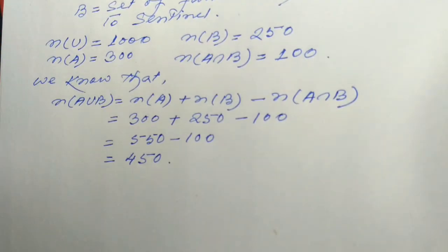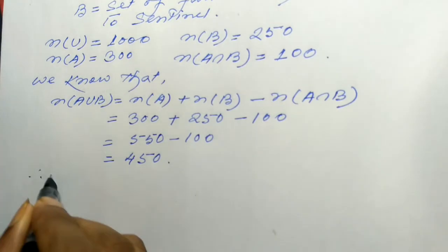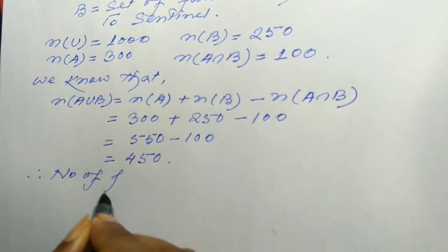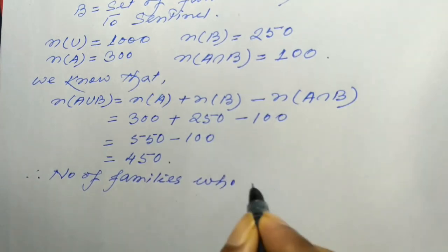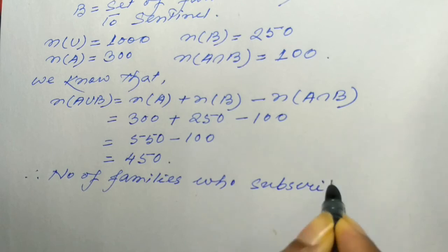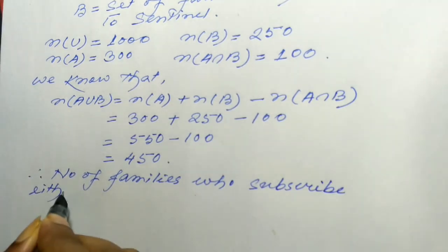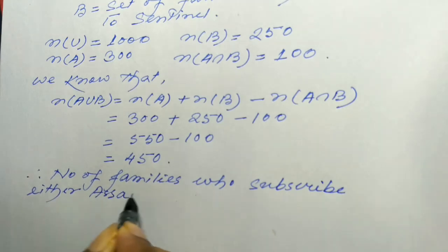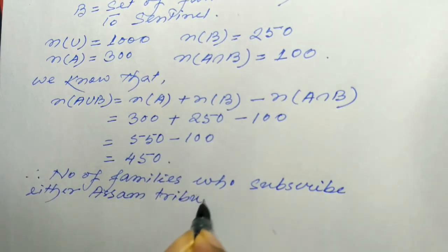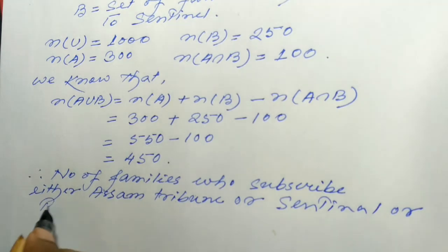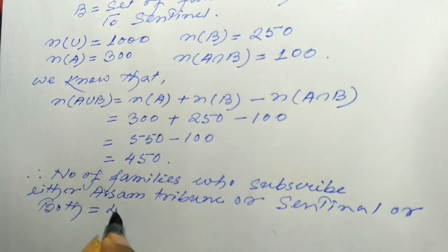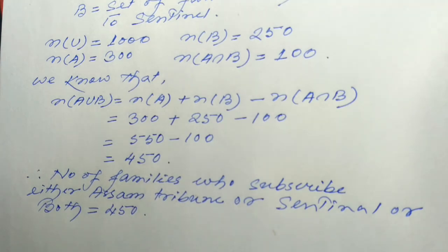Therefore, the number of families who subscribe to either Assam Tribune or Sentinel or both is equal to 450. So at least one paper is subscribed to by 450 families.